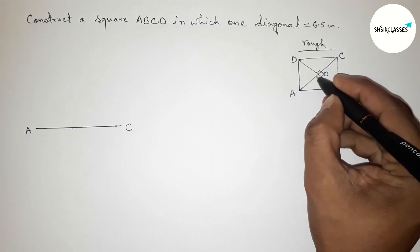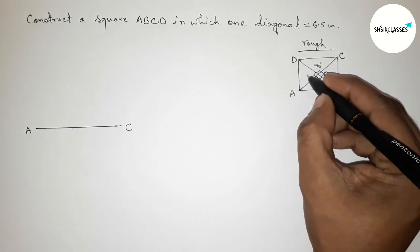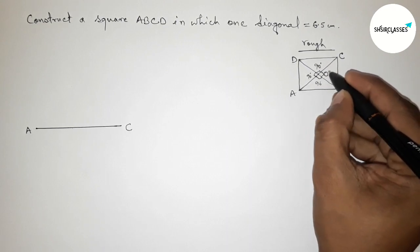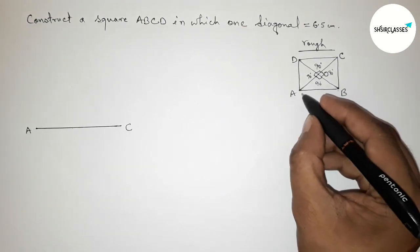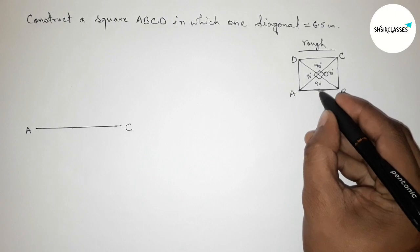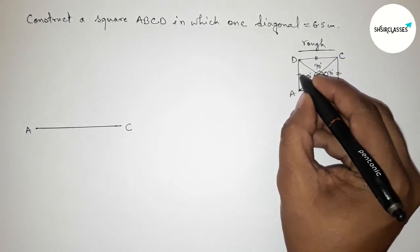Now here the two diagonals AC and BD intersect or bisect each other at the point O with perpendicular. That's mean all the angles must be 90 degree, so this is also 90 degree.